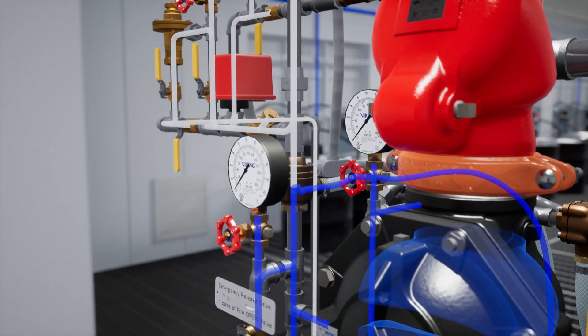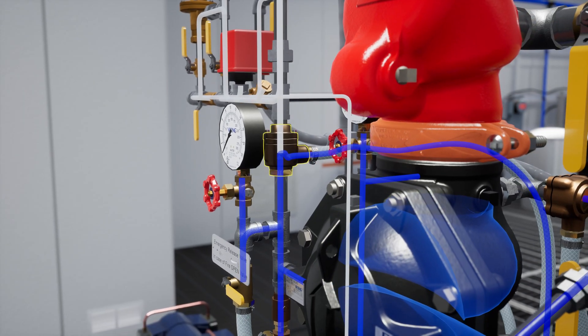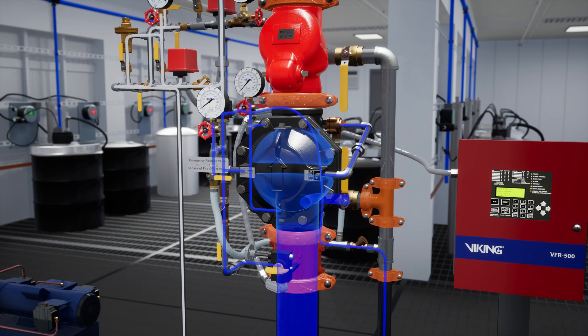After reestablishing air pressure in the dry pilot line, the pneumatic actuator will reset and allow the water pressure in the prime chamber to rebuild.